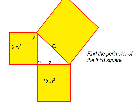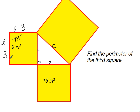The area of the first square is 9, which means that when we multiply the length times the width of this first square we get 9. They are the same length, so what number when multiplied by itself gives you 9? You take the square root of 9 and find that each side of this square is 3. So we know A is 3.